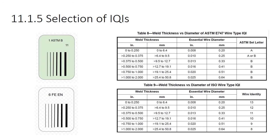Table 8 tells you which IQI set to use based on wall thickness. If you're using the ASTM, you go by wall thickness and it tells you which letter set — A or B — to use, and provides the essential wire diameter for that IQI. You place the IQI on your radiograph to ensure the image has the requisite clarity and contrast so it can be read clearly, not a blurry mess. Table 8 and Table 9 are used to find the appropriate values.